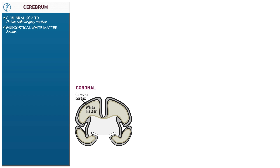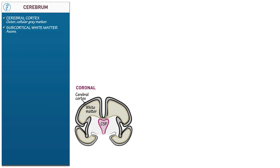Next draw the cerebrospinal fluid system within the center of the cerebrum. This system forms pockets of fluid deep in the brain. The cerebrospinal fluid assists the meninges in nourishing and supporting the nervous system with essential nutrients and metabolites.